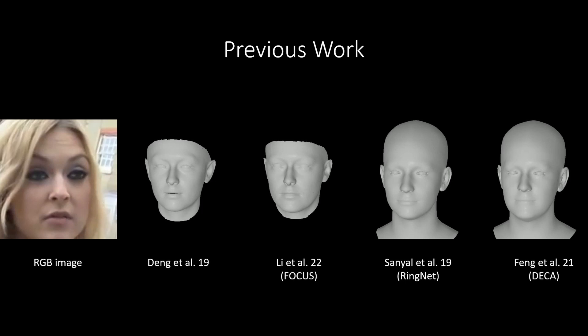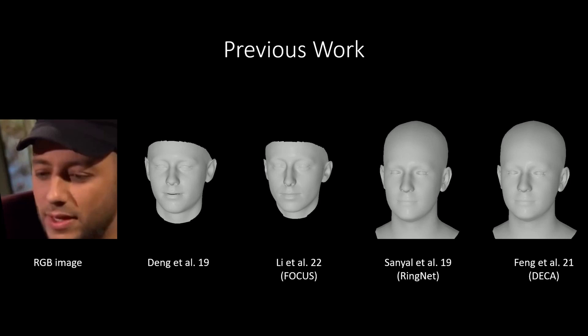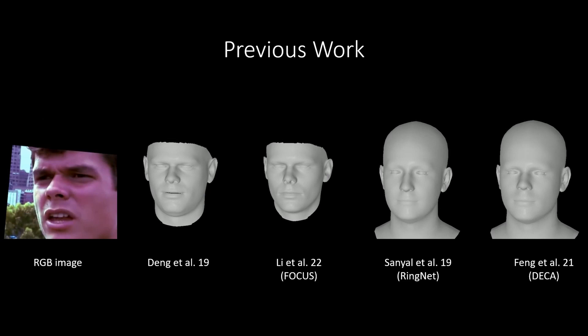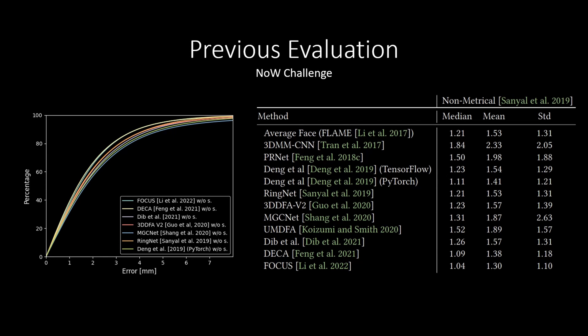Here you can see some qualitative results of previous work. Please note that some predictions are characterized by strong regularization towards the mean shape. Moreover, these methods do not provide a metrical 3D reconstruction. We observe that current literature uses non-metrical evaluation schemes. Although the 3D morphable models are metrical, the used evaluation schemes are scale-invariant.